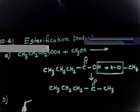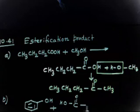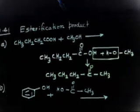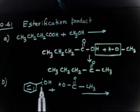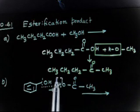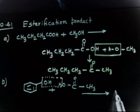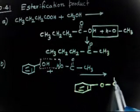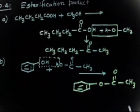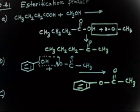For Part B, you have to write down the esterified product. Here you have an alcohol — this is a phenol — plus an acid on the other side. You can remove one molecule of water here. We will discuss the mechanism of this esterification reaction later. The product will have the phenol ring connected through the ester linkage with CH3.